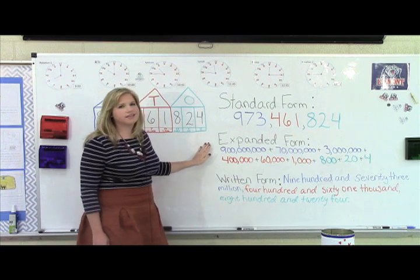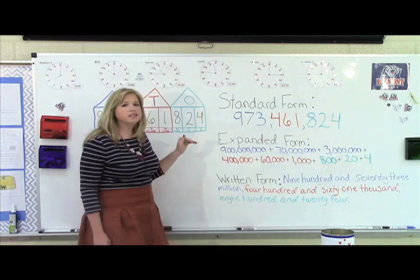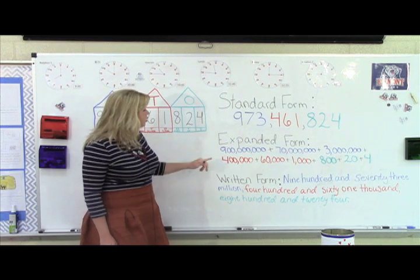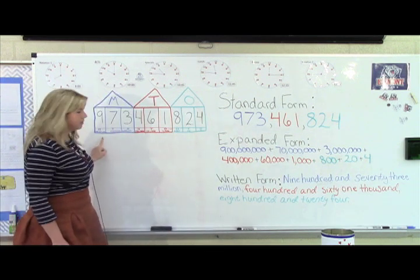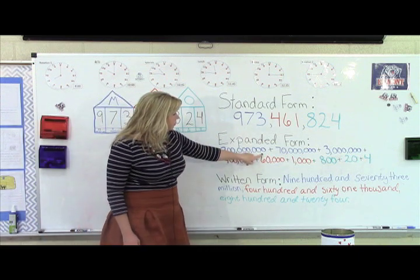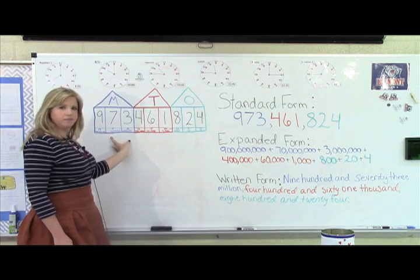Then you have expanded form, and this is where your child really has to think about what place value each number has. So we start with the nine. If you see we have 900 million, so you're actually going to write out 900 million, plus we know we have 70 million.